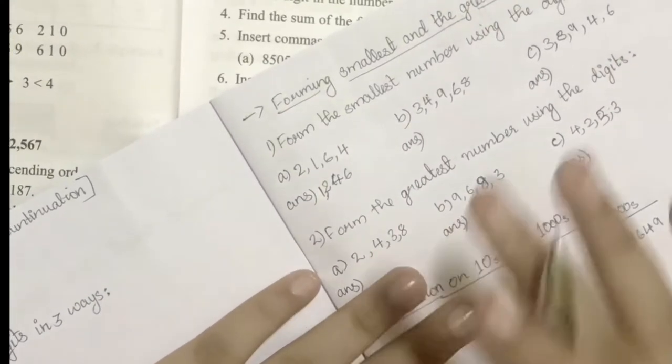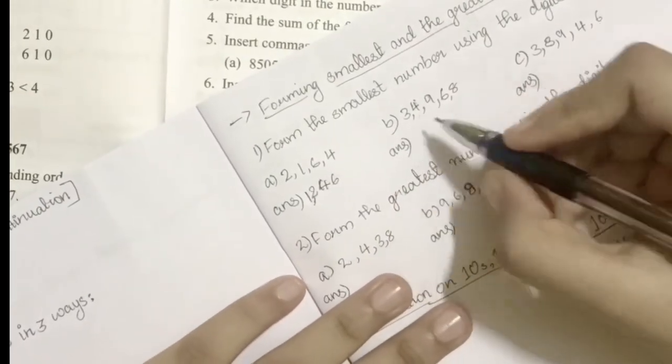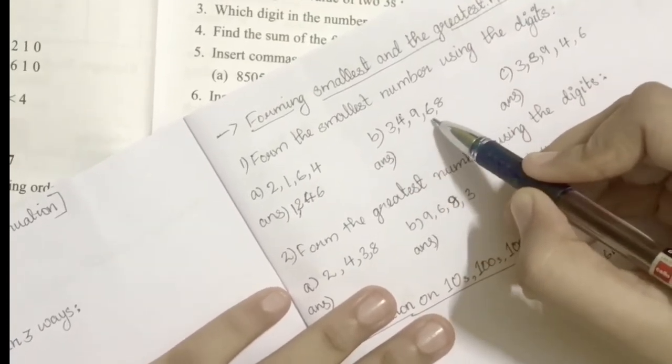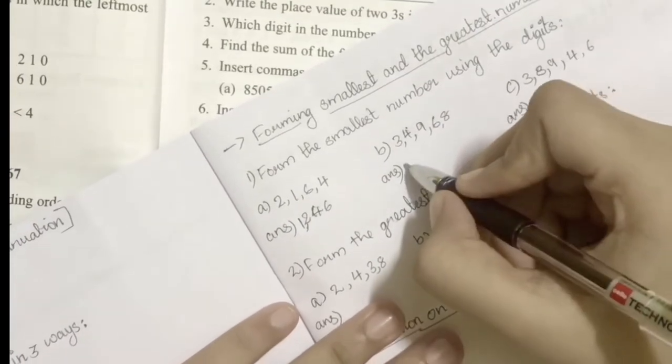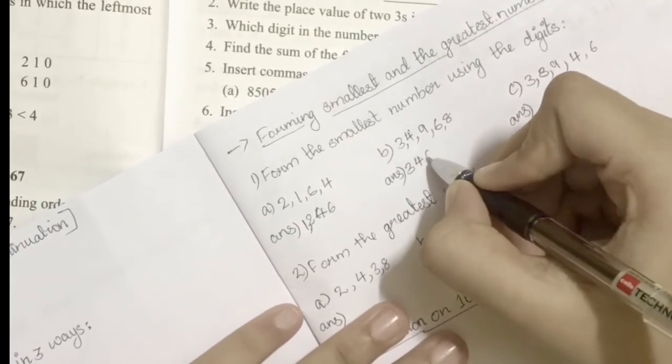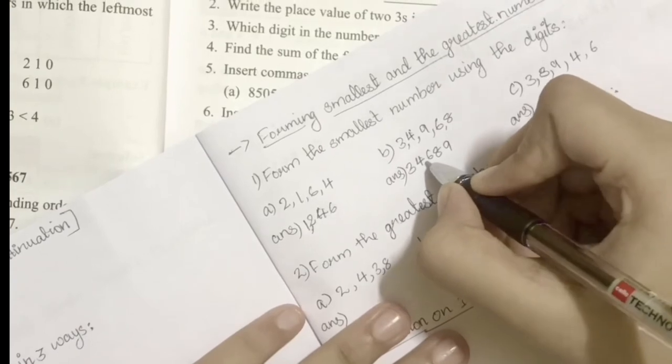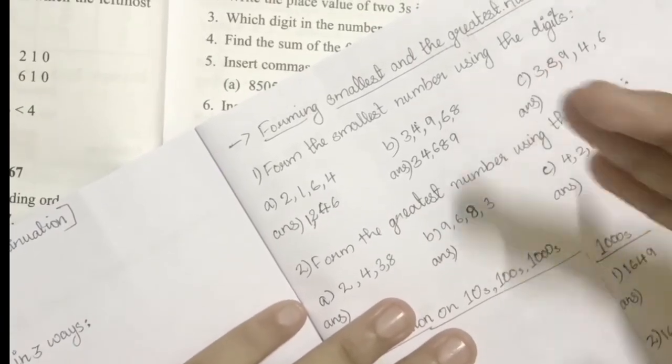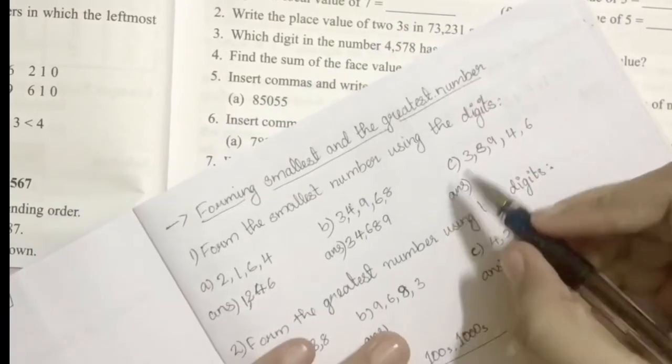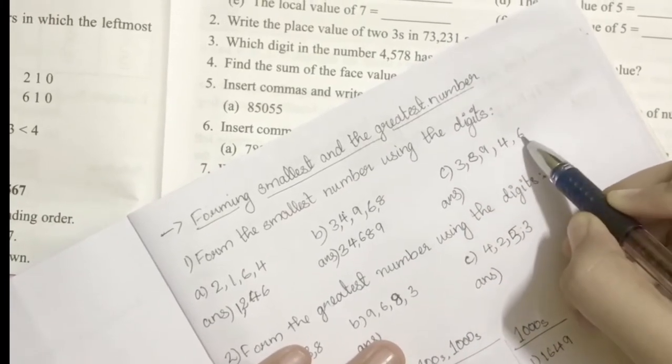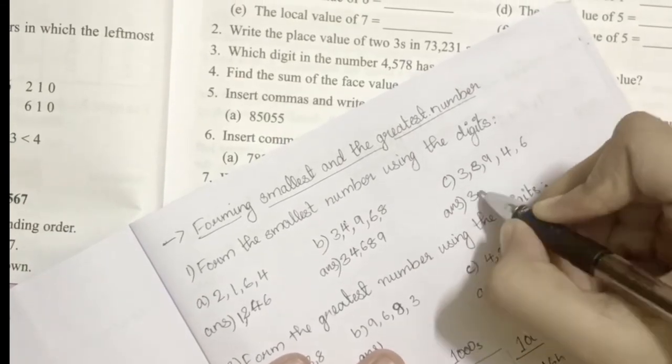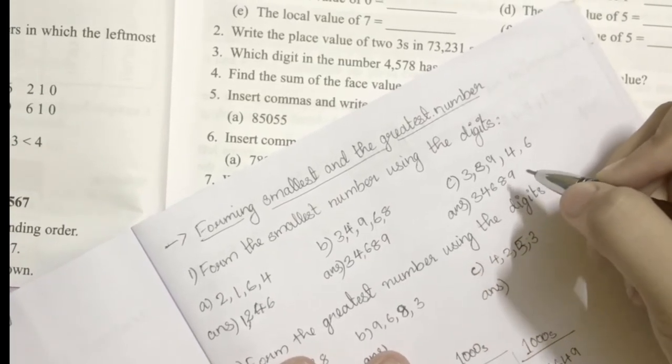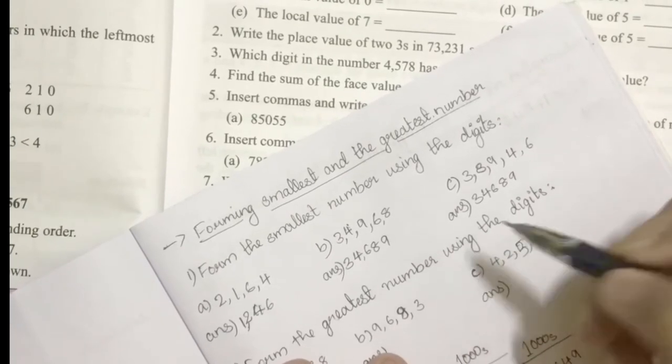After that we get a five-digit number: 3, 4, 9, 6, 8. The smallest number is formed by arranging as 3, then 4, then 6, then 8, then 9, so it will be 34,689. Then we have 3, 8, 9, 4, 6 - arranging in order gives 34,689. It's the same, just for an example.